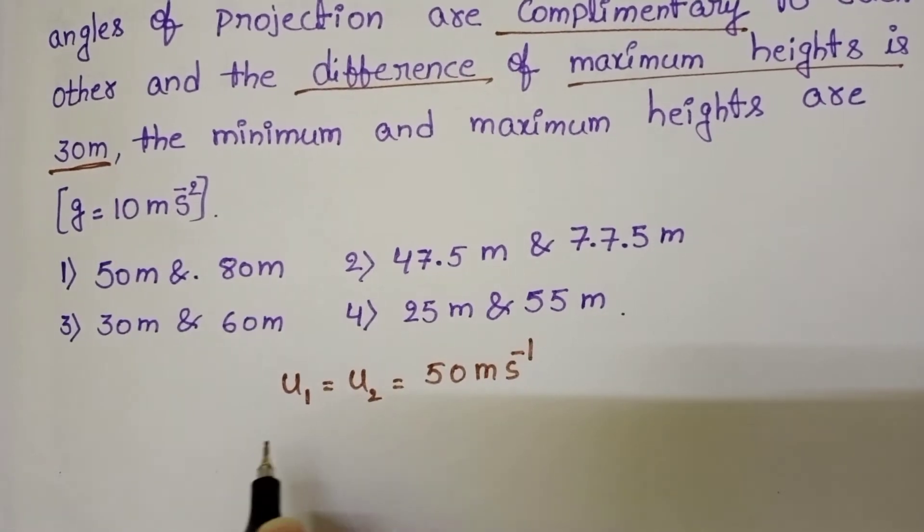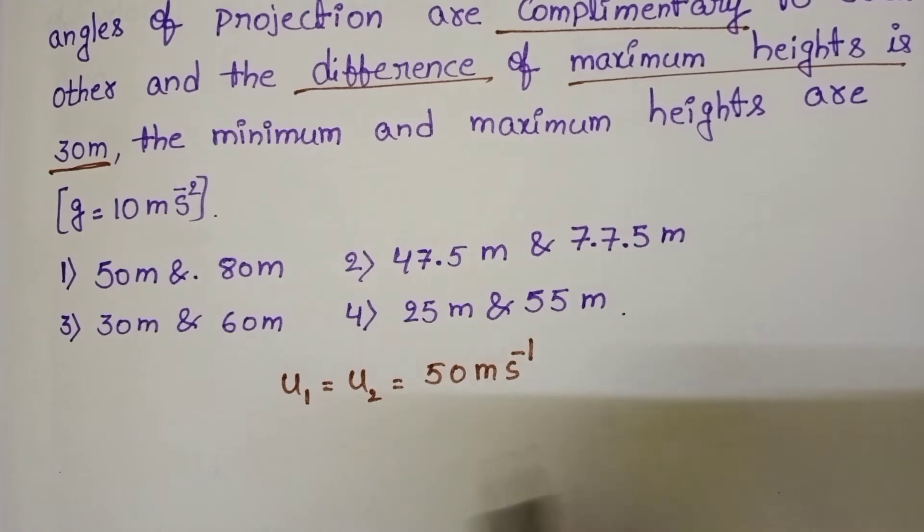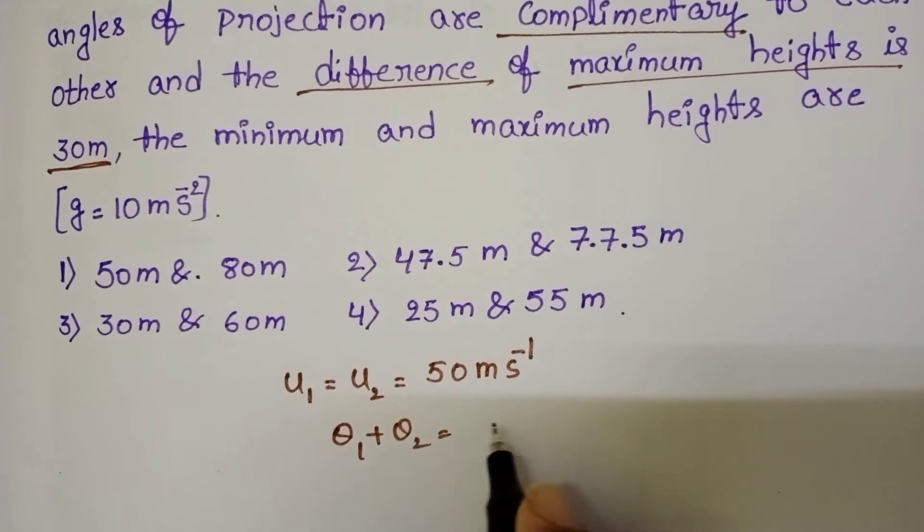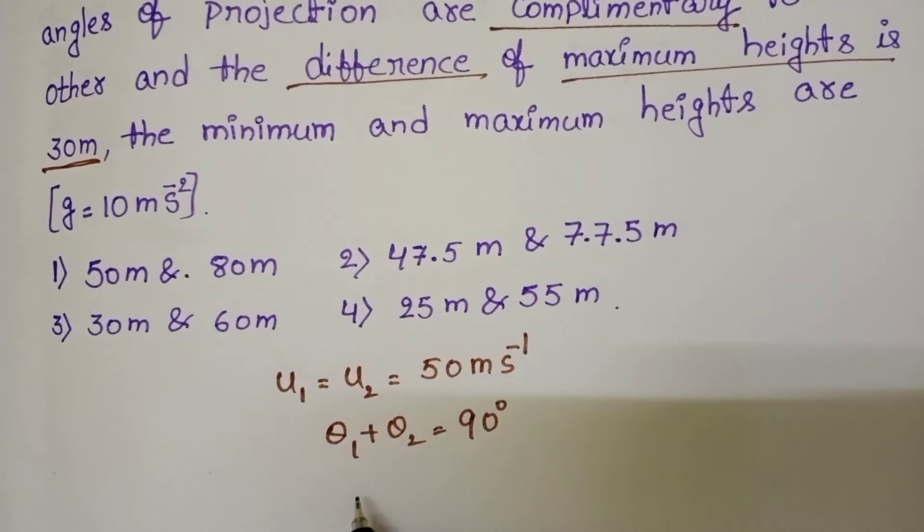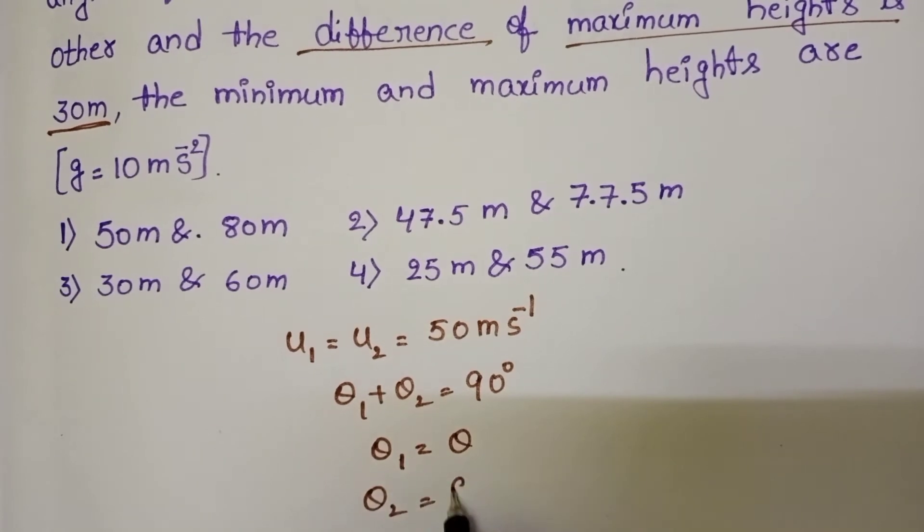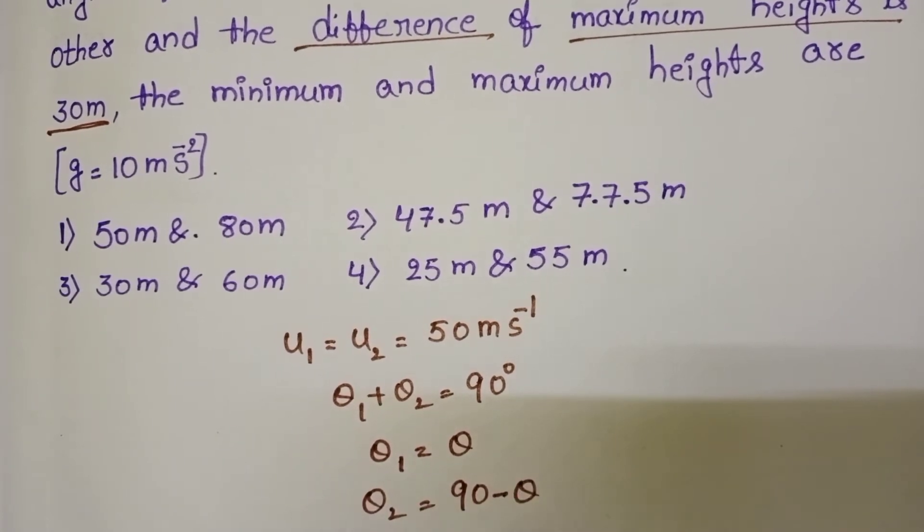These two bodies are projected with complementary angles. Complementary angles means sum of the two angles equals 90 degrees. If one angle is theta then second angle becomes 90 minus theta.